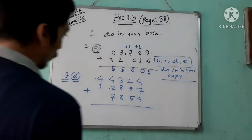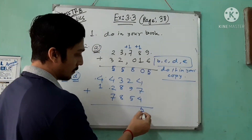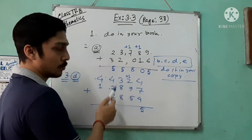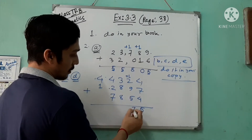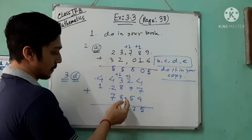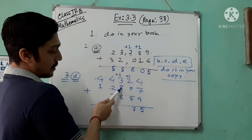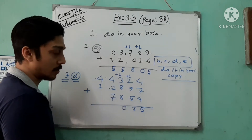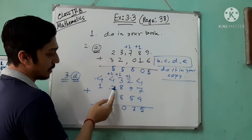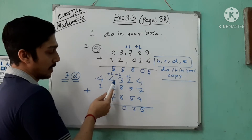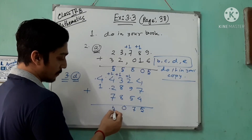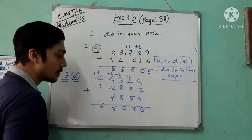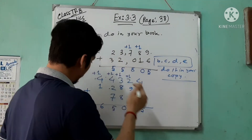Seven plus four is eleven, eleven plus four is fifteen, so write five and carry one. Five plus nine is fourteen, fourteen plus two is sixteen, sixteen plus one is seventeen — write seven, carry one. Eight plus eight is sixteen, sixteen plus three is nineteen, nineteen plus one is twenty — write zero, carry two. Seven plus two is nine, nine plus two is nine, nine plus four is thirteen, thirteen plus two is fifteen, carry one. One plus four is five, five plus one is six.